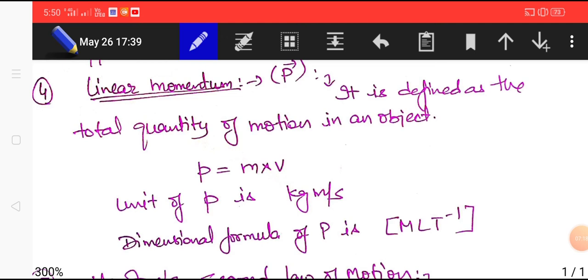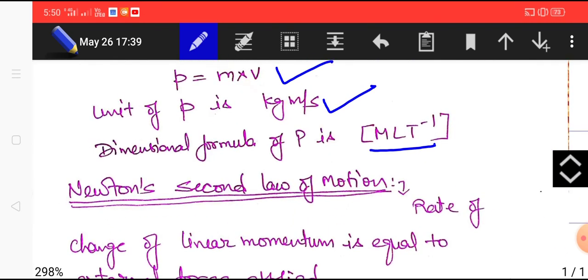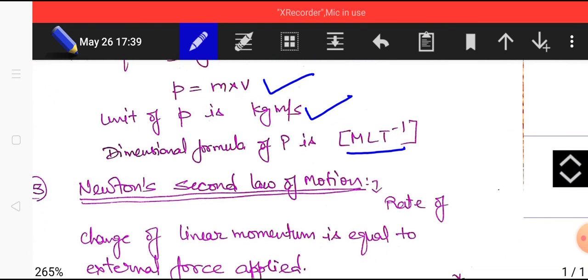Linear momentum is defined as the total quantity of motion in an object and mathematically it is defined as product of mass and velocity. So its unit becomes kilogram meter per second and dimensional formula is MLT minus 1 and it is a vector quantity. Please note that momentum is a vector quantity.